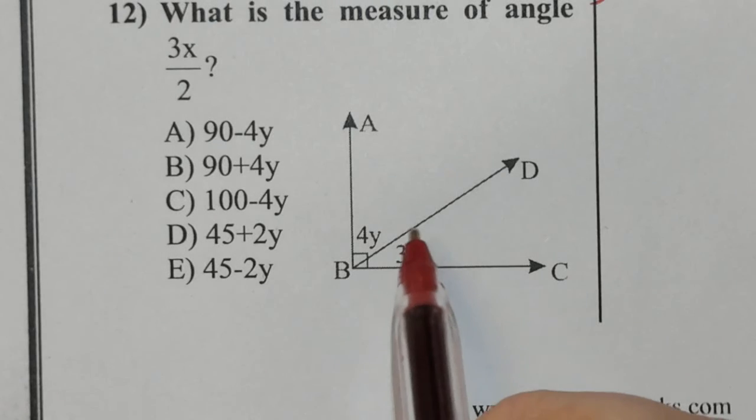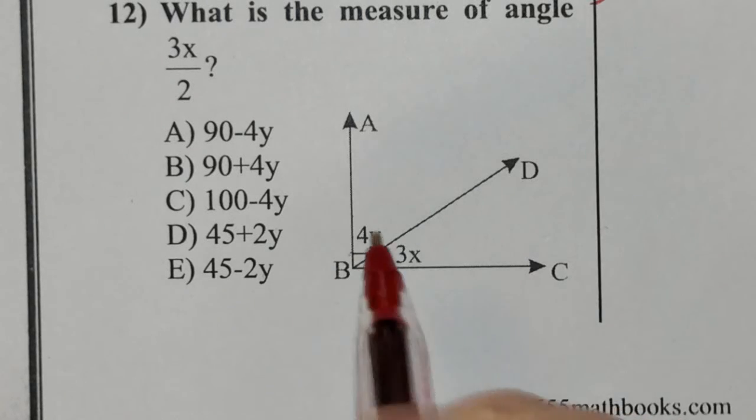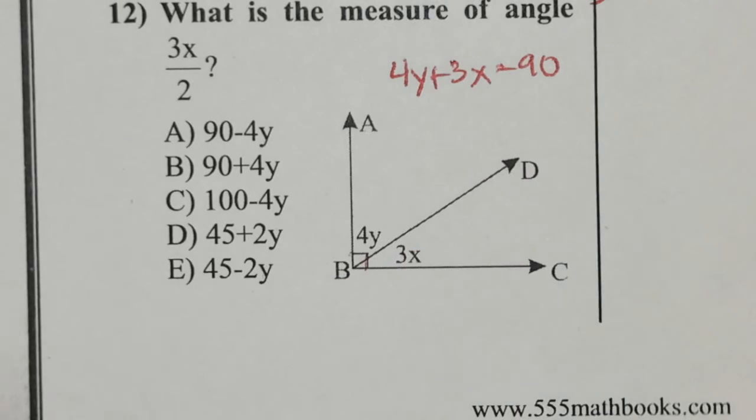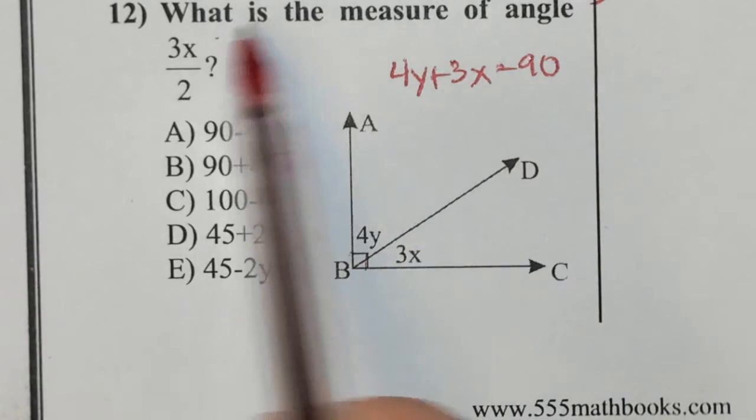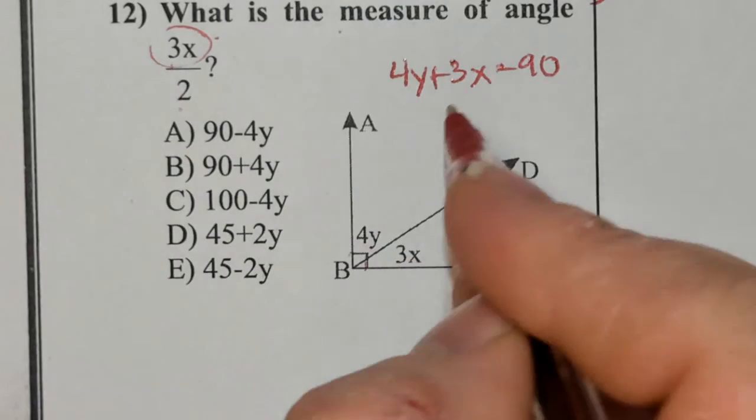So I can see that we have a right angle here denoted by the box down below, so I know that 4y plus 3x equals 90. Now, we want to know the measure of 3x divided by 2, so first let's just isolate the 3x.